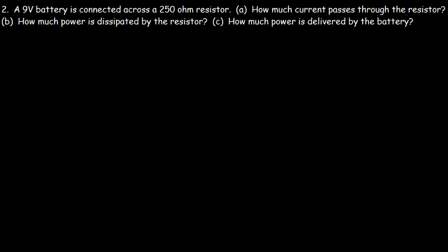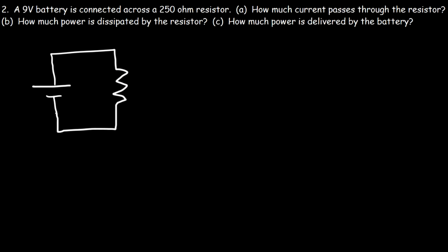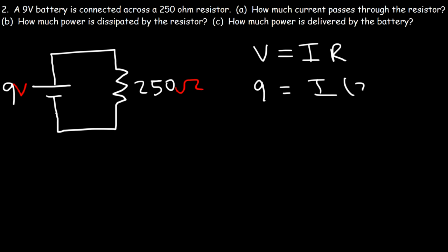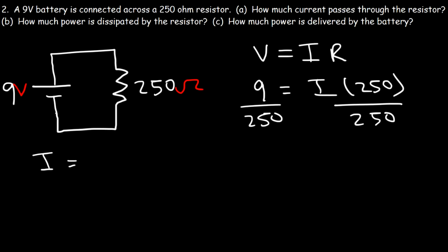Problem 2: A 9-volt battery is connected across a 250-ohm resistor. How much current passes through the resistor? Using Ohm's Law, V equals IR, with voltage 9 and resistance 250, we solve for I by dividing both sides by 250. So I equals 9 volts divided by 250 ohms, which equals 0.036 amps, or equivalently 36 milliamps.